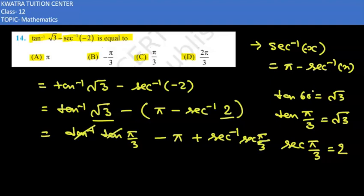Now tan and tan inverse will be cancelled and sec inverse with sec will be cancelled. So we are left with pi by 3 minus pi plus pi by 3.